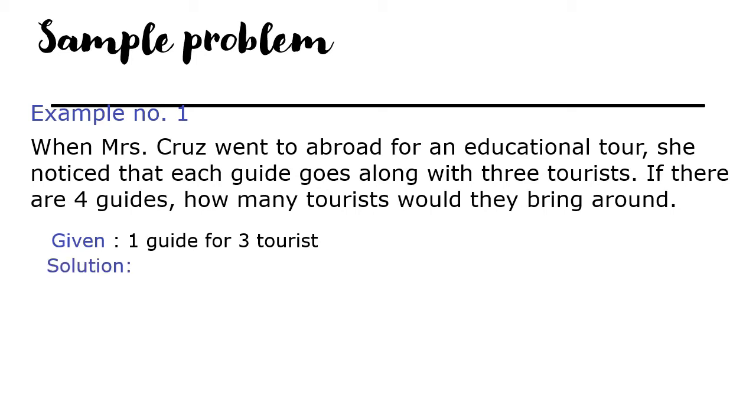Here is the solution. First, write the related proportion. You have guide to tourists equal to guide to tourists. That is 1 to 3 equal to 4 to N.